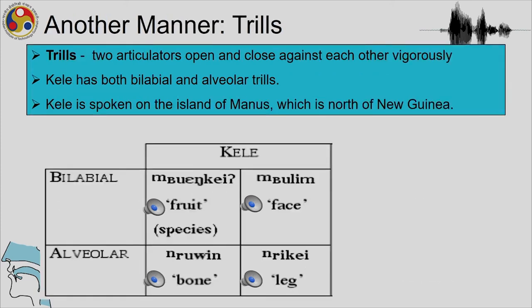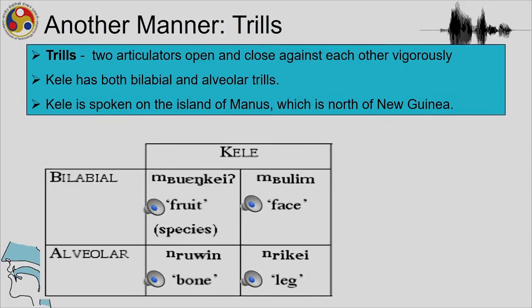Another manner not yet discussed extensively is trills. As we saw in the video, two articulators open and close against each other rapidly. Khele, a language spoken in Manus Island, New Guinea, has both bilabial and alveolar trills.